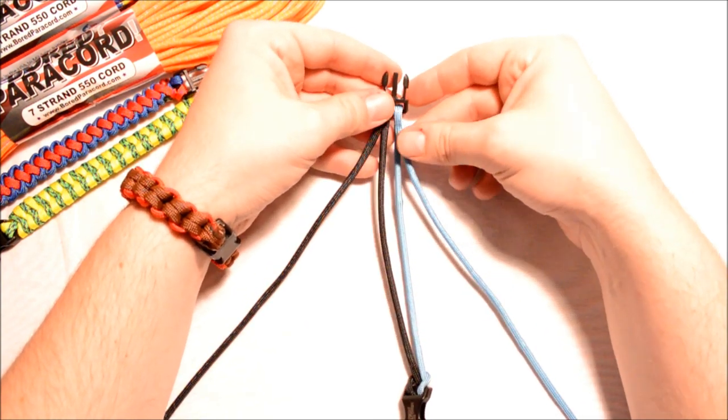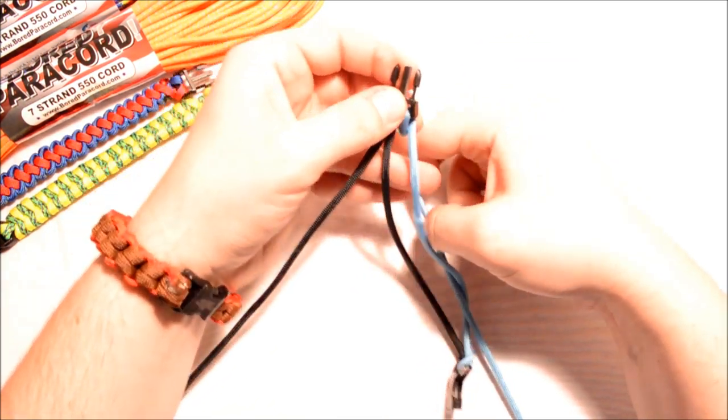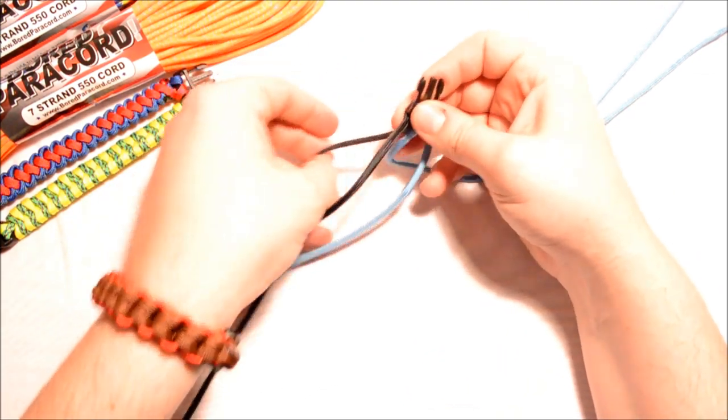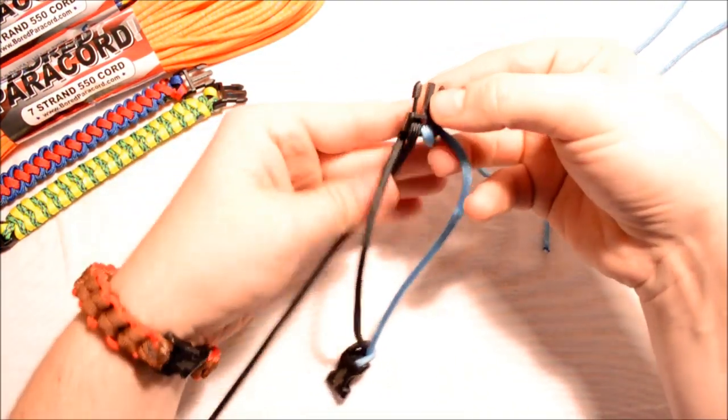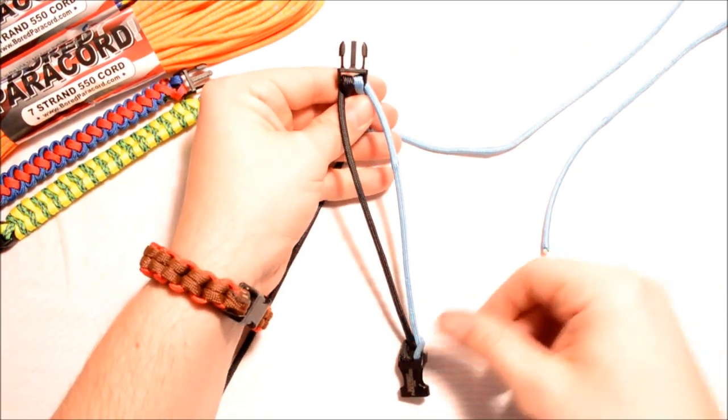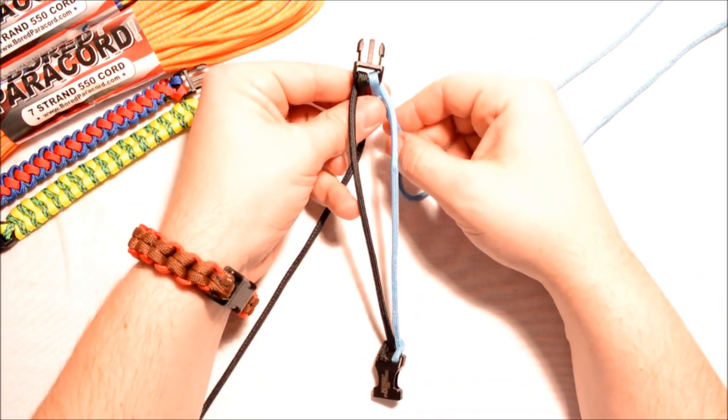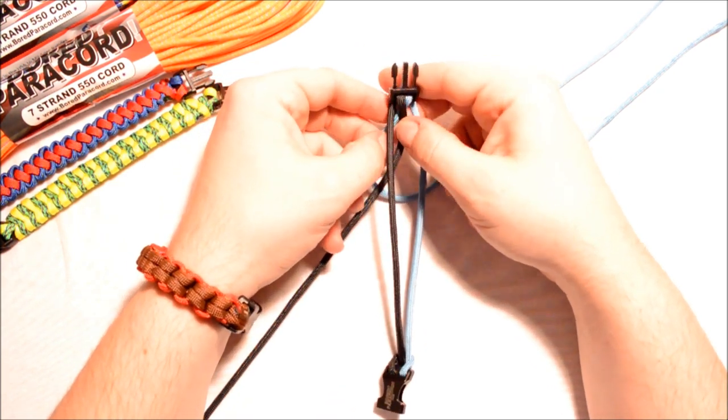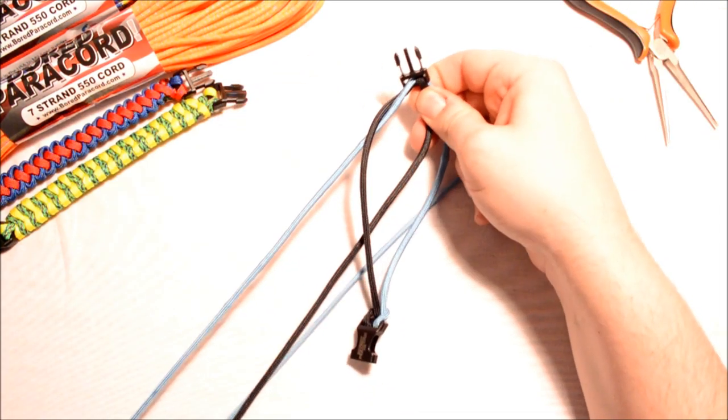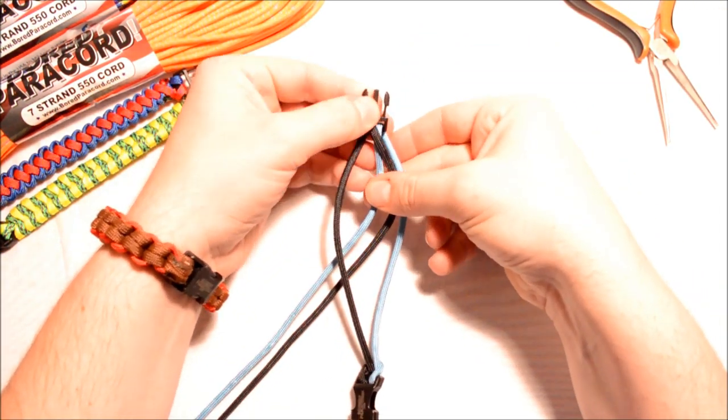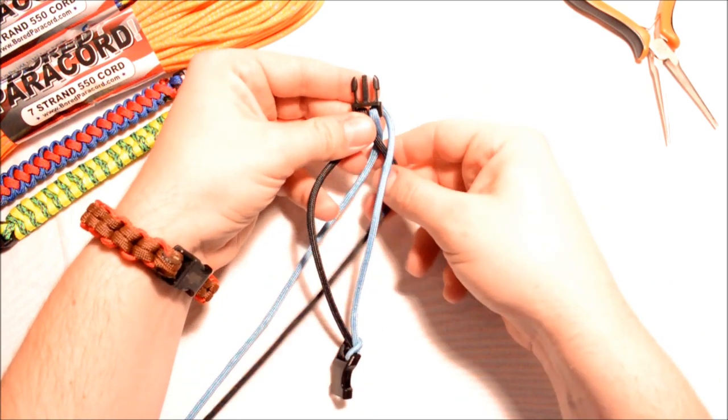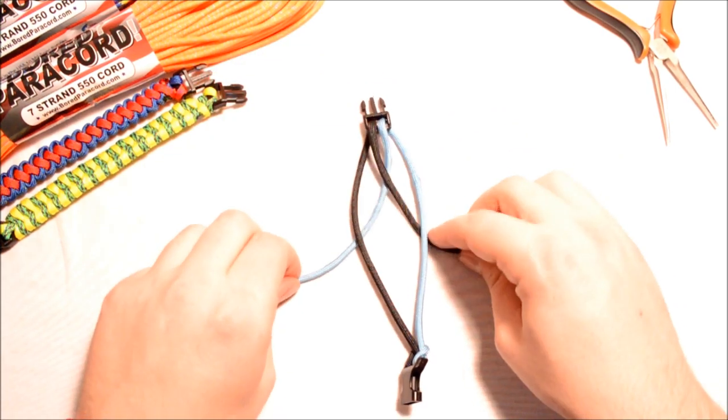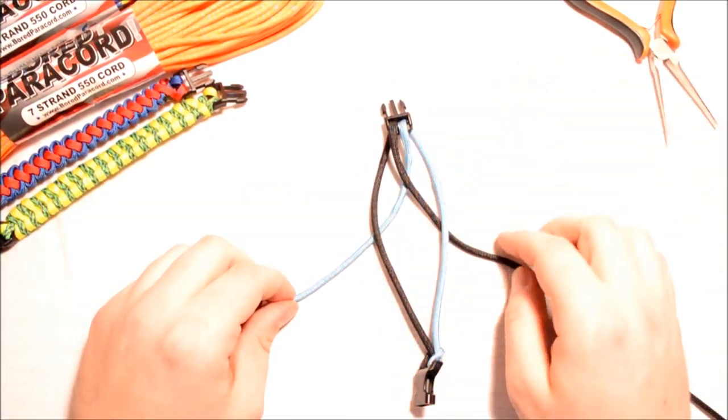So the first thing we need to do is pull our paracord through the center. We're going to take the right side through the center and we're going to take the left side through the center so now we have kind of a loop going on that goes right down through the center. Okay, now we're going to cross. What I mean by crossing is basically we've got a cross that goes down through the center.